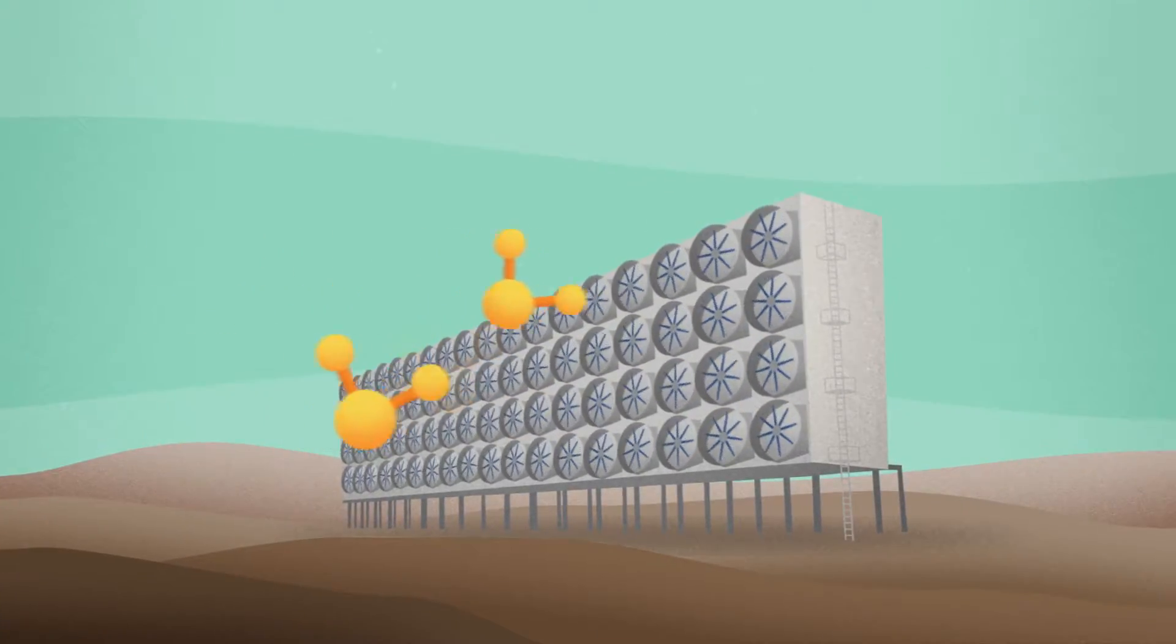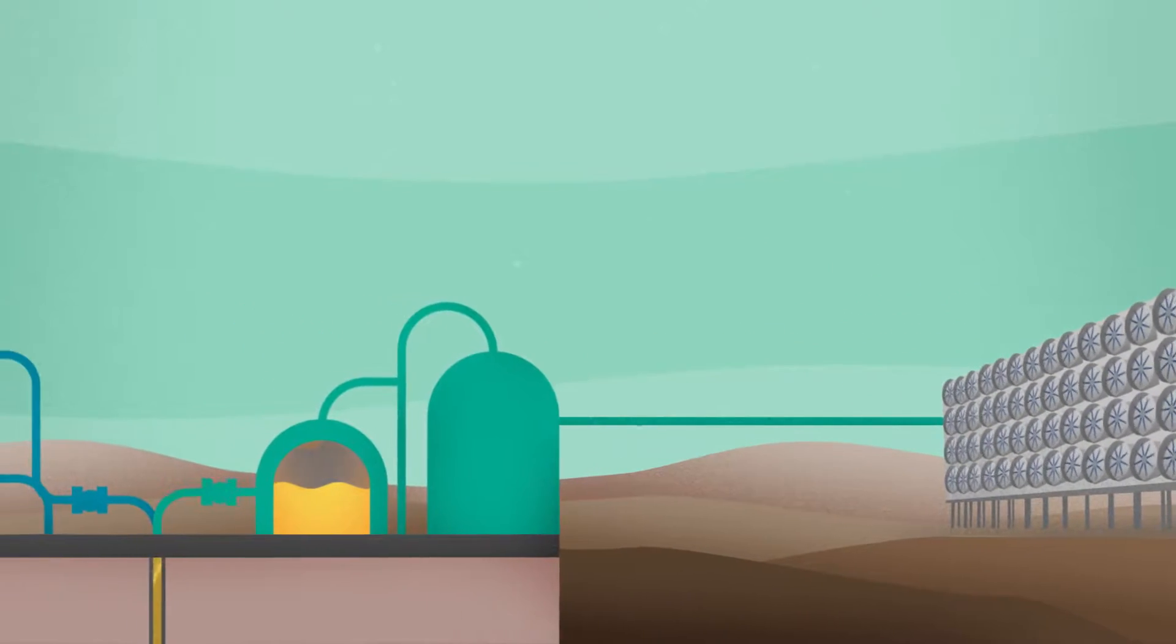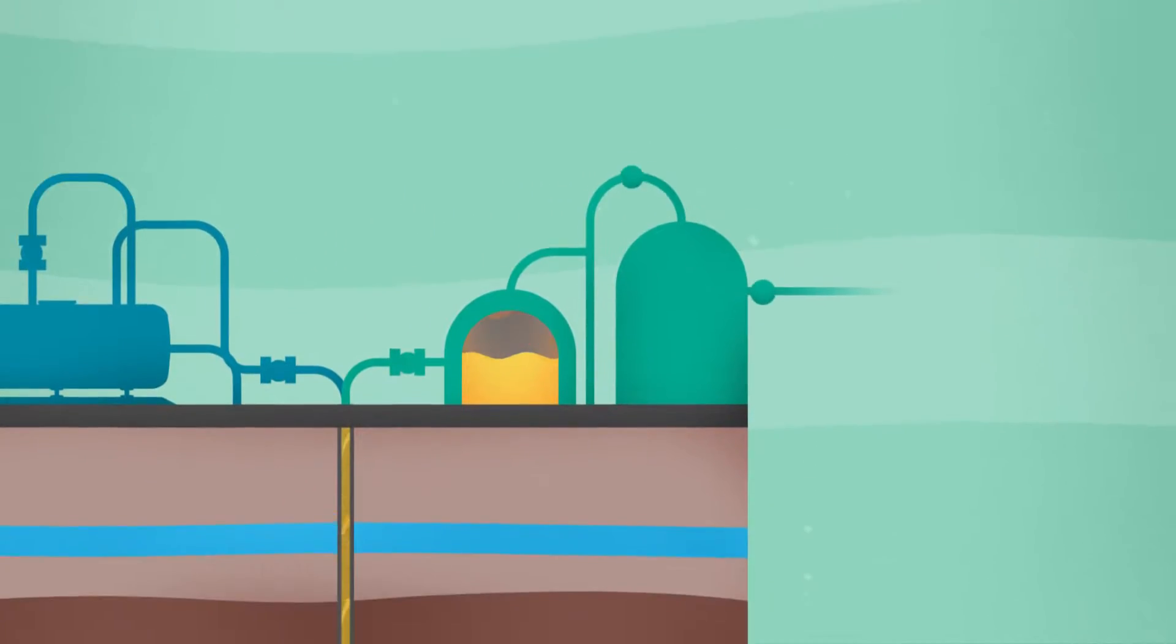That captured carbon is processed and then condensed into supercritical fluid before it's piped to a production site where it's injected into a reservoir deep underground.